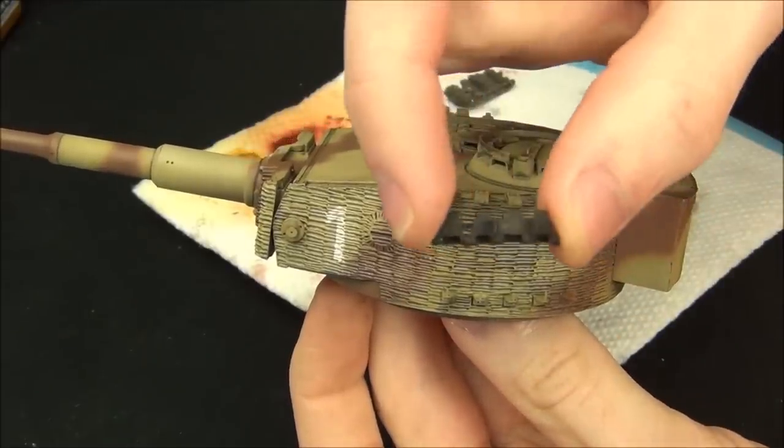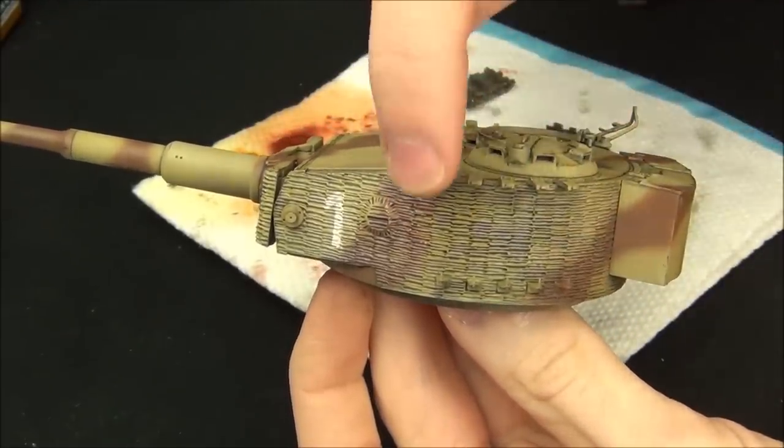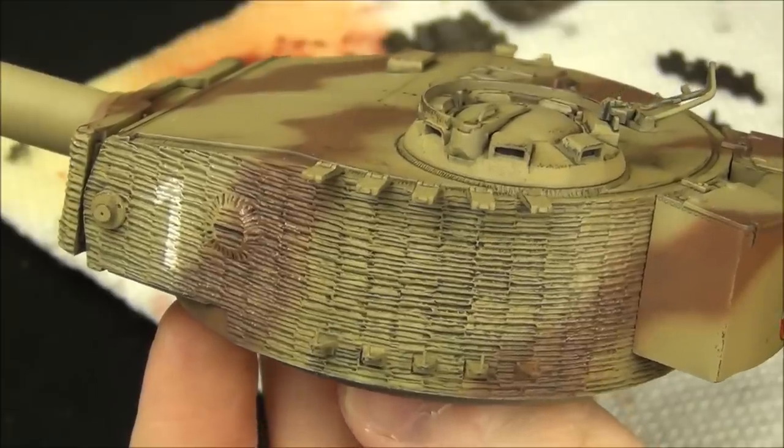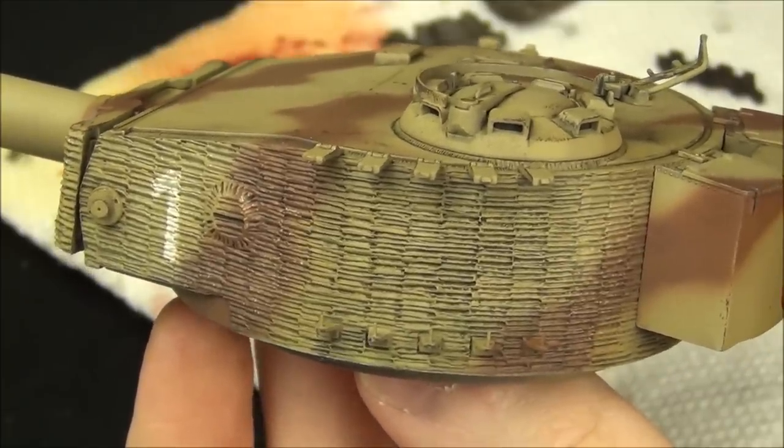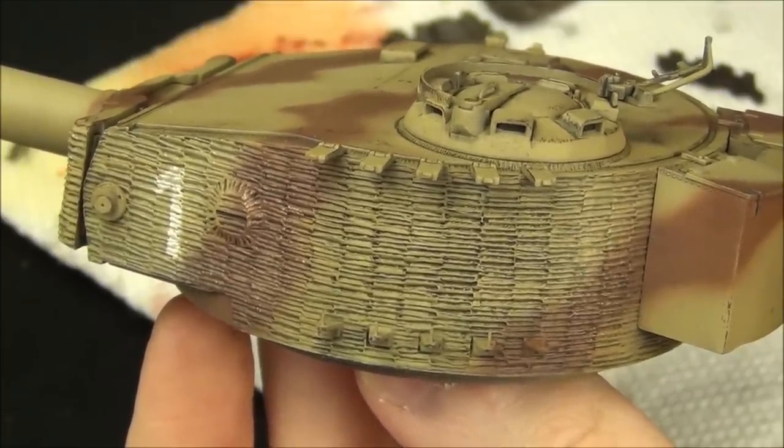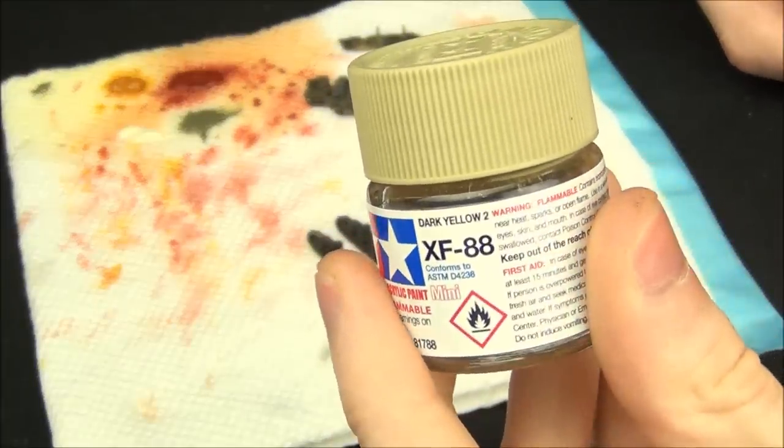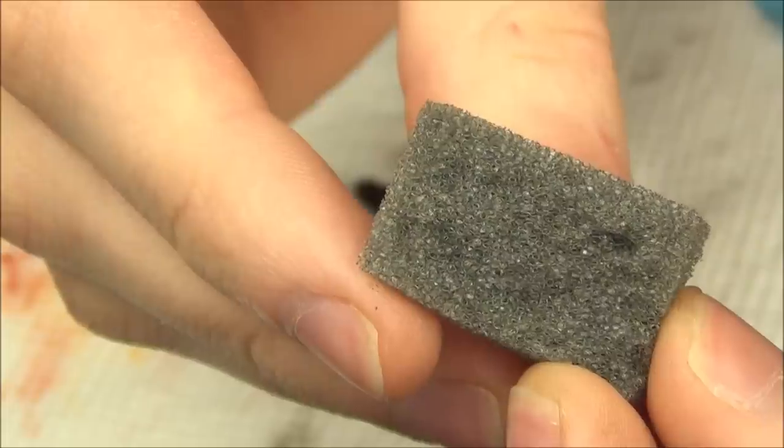Now the other tracks here, the singletons, they go on the side of the tank as spares in case they need to change them out. And usually they are actually painted over at the factory. Not always but usually. So I'm going to take some of the Tamiya dark yellow paint I used to paint the tank in the first place and apply it to the tracks using a sponge.